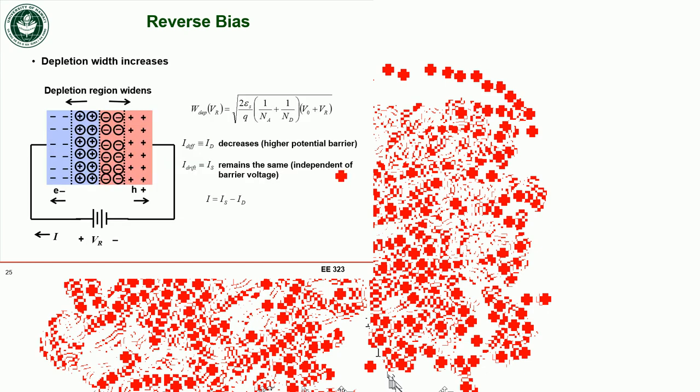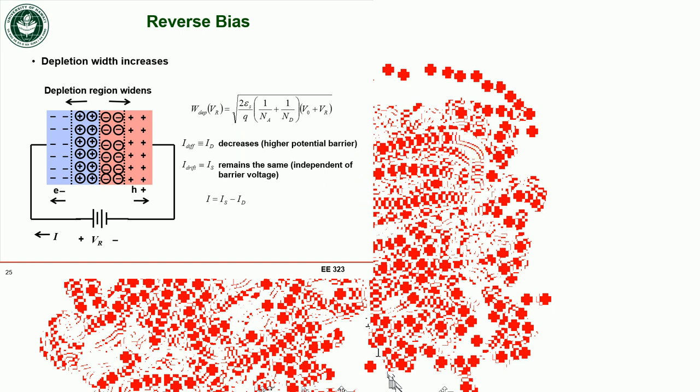As the reverse bias increases, the depletion region gets wider, increasing the distance between the separated charges. This changes the junction capacitance. A wider separation means a smaller capacitance, consistent with a parallel plate model.